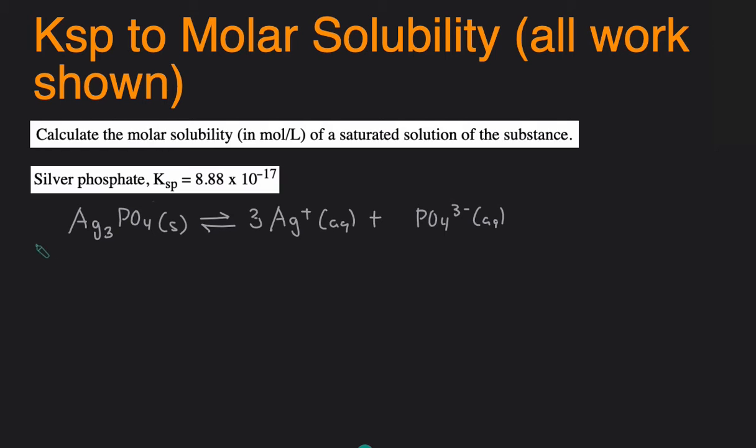Then we set up an ICE table. Since silver phosphate is a solid, solids and liquids don't go into equilibrium so we'll just draw a line through it.